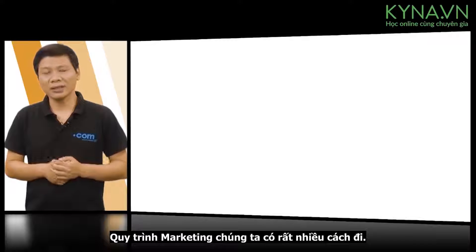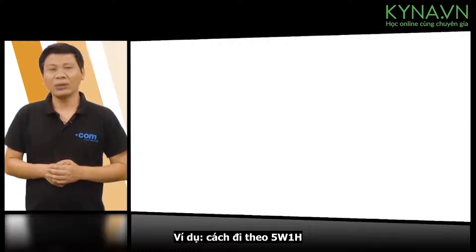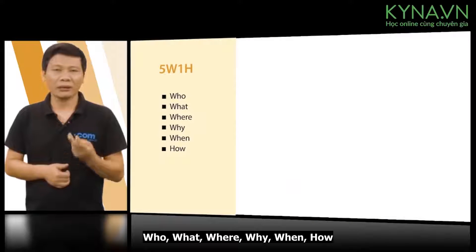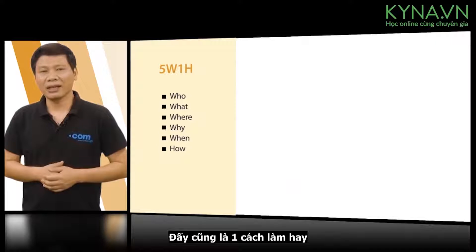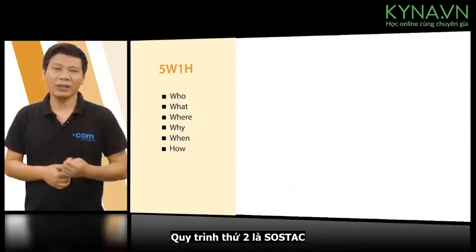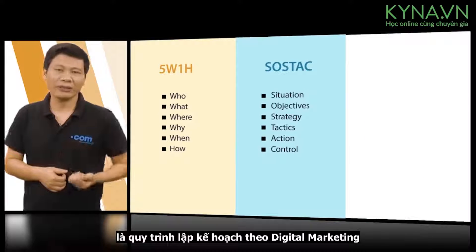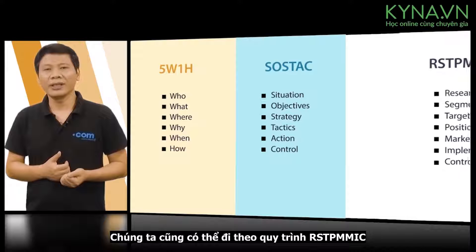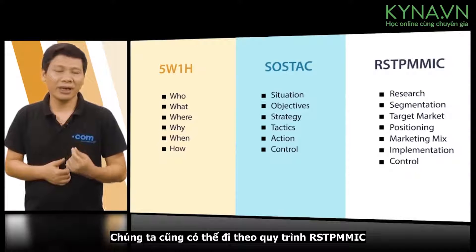In marketing, there are many ways to go. For example, the 5W1H framework: who, what, where, when, why, and how. That is one way to do it. We can also follow the RSTPMIC framework.